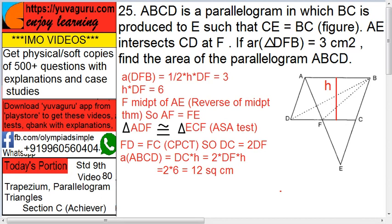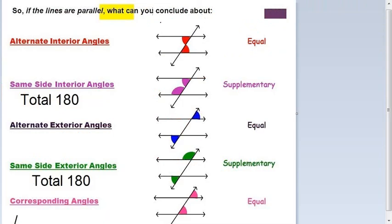Since AF equals FE, triangle ADF is congruent to triangle ECF by ASA test. The angles are vertically opposite, the sides AF and FE are equal, and the alternate angles are equal because BC is parallel to AD with a transversal — these are internal alternate angles, as covered in the triangle chapter.